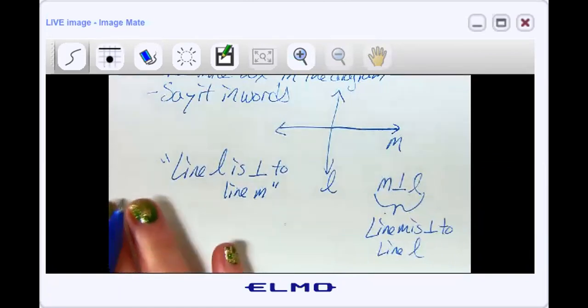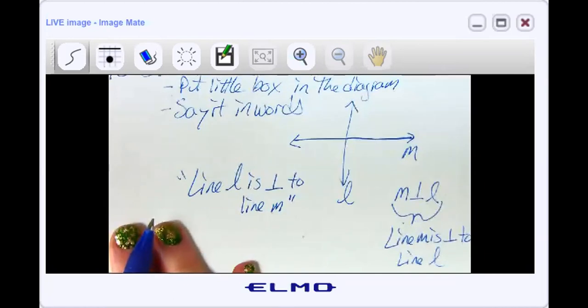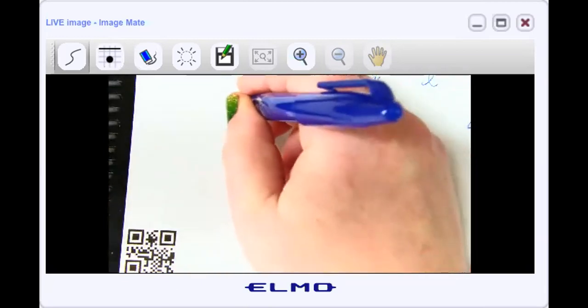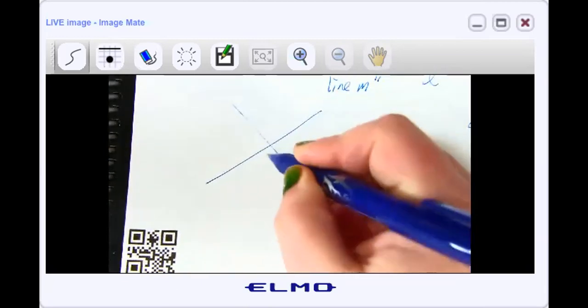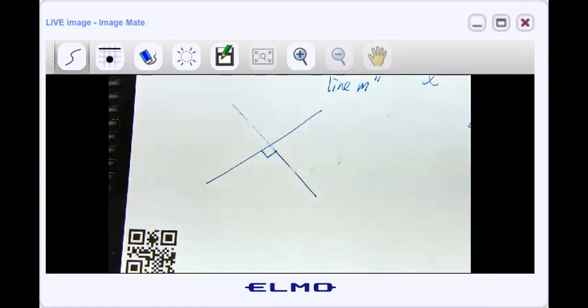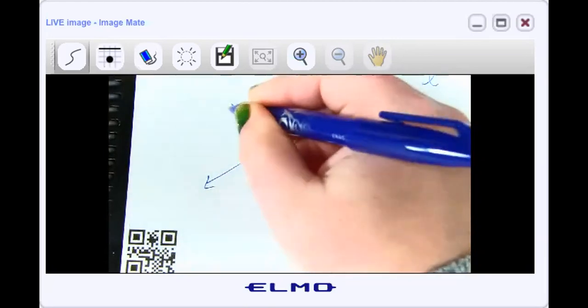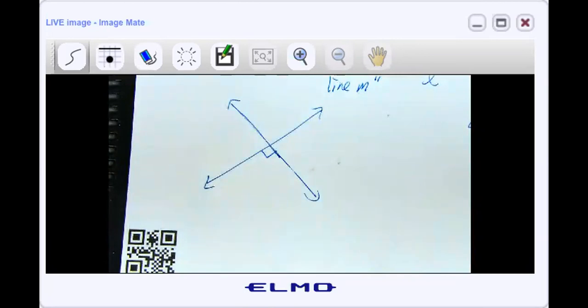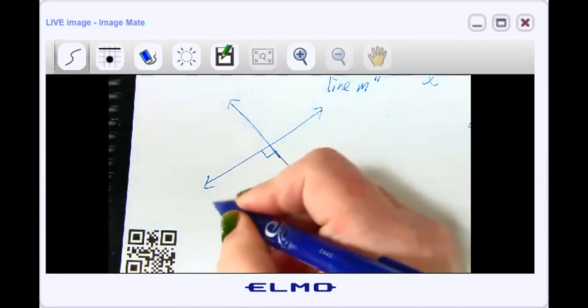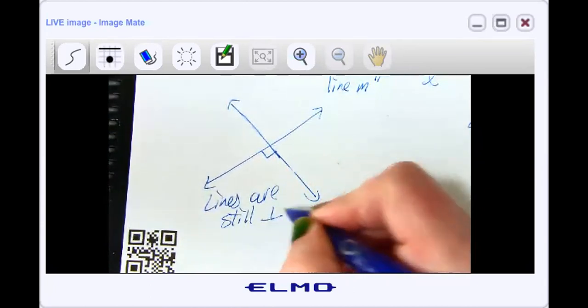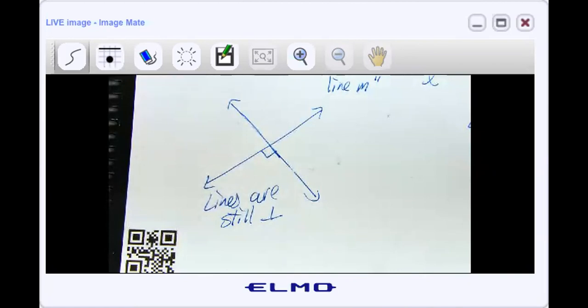Be careful. By the way, a lot of times we think that perpendicular lines have to look like this plus sign. One's going up and down, one's going side to side. That doesn't have to be the case at all. They could certainly be on a slant. As long as these angles are 90s, these are still perpendicular lines.